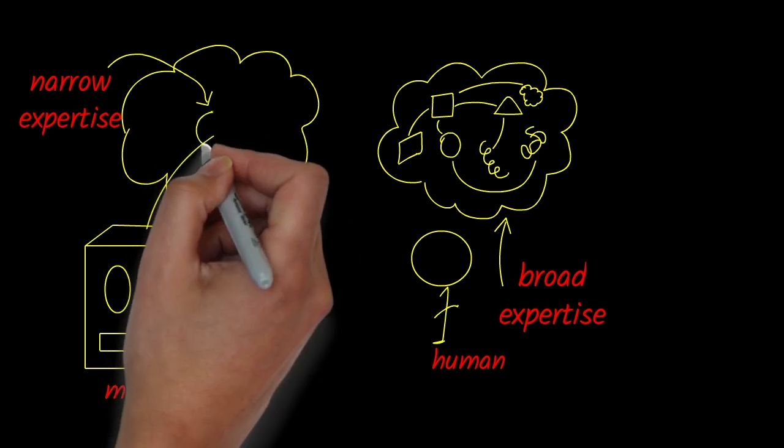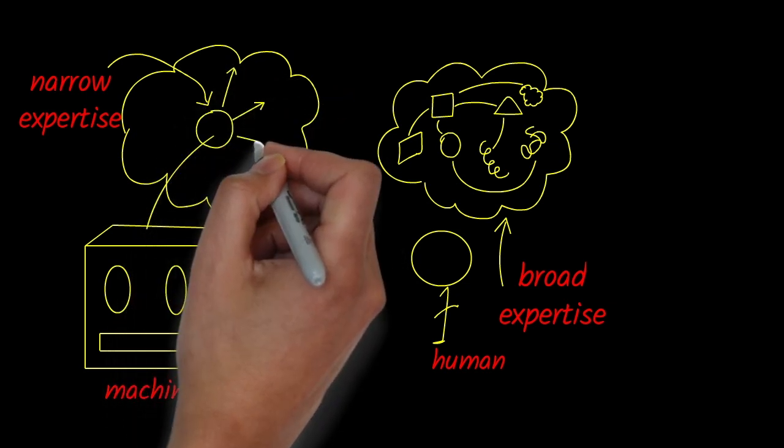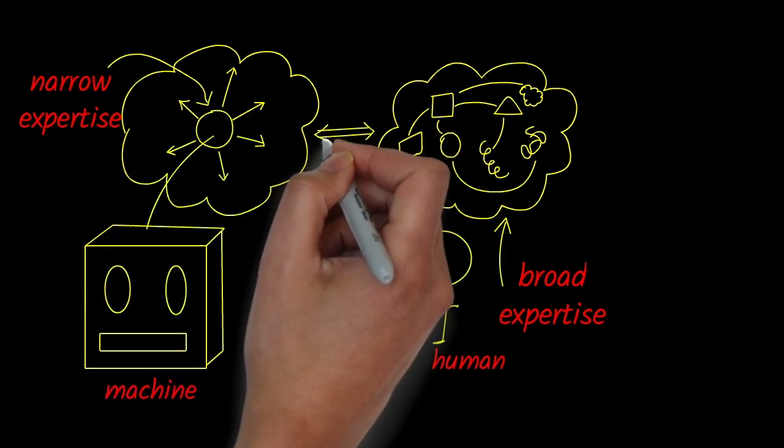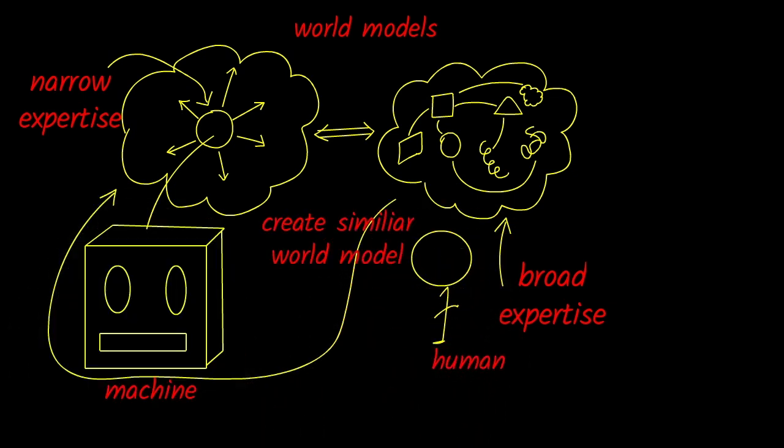Now, scientists are working towards something far more ambitious, artificial general intelligence, or AGI. The idea is to create computers that can think and reason as broadly as humans do by modeling how humans perceive and understand the world, what's known as the world model. Here's the catch, though. We don't fully understand how our own brains represent the world. If we did, we could program AGI and it would be much simpler. Instead, researchers are experimenting with approximations, hoping to uncover the key to AGI.